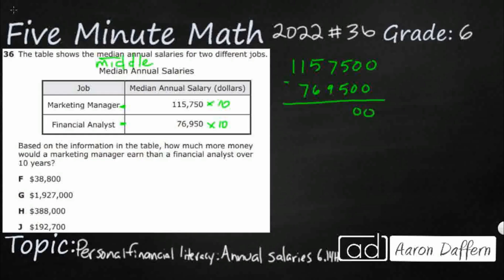So subtracting: that's zero, then I need to regroup — that's eight, regroup again — that's another eight, and 10 minus 7 is 3. That gives us $388,000. That's big! Over 10 years, this marketing manager is going to make $388,000 more. That's where you start seeing the cumulative effect of all of these.